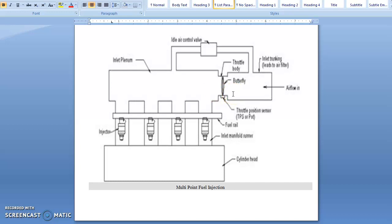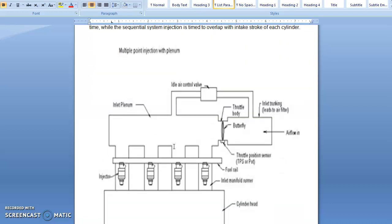Now let us discuss throttle body injection system. In throttle body injection system, an injector is placed slightly above the throat of the throttle body. The injector sprays the petrol into the air in the intake manifold, where the petrol mixes with the air. This mixture then passes through the throttle valve and enters into the intake manifold.